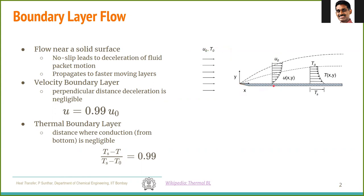Because the velocity is zero here, the packets tend to retard the layers of fluid above them. Similarly, each packet tends to retard the fluid above it, and so on. So this deceleration of motion leads to a gradient in the velocity, and this propagates from the wall upwards.